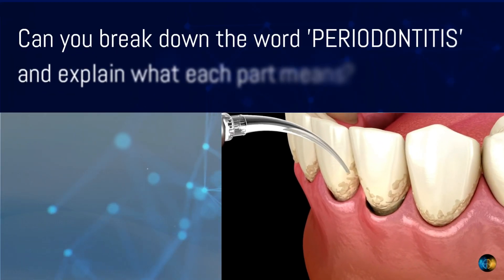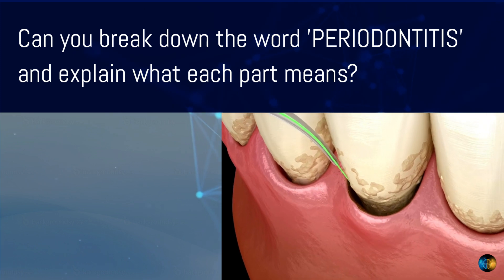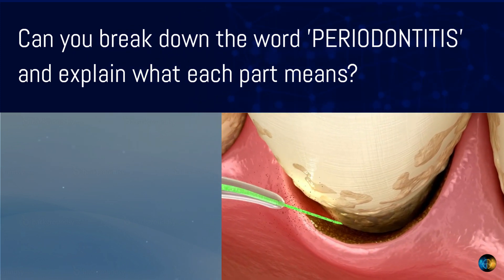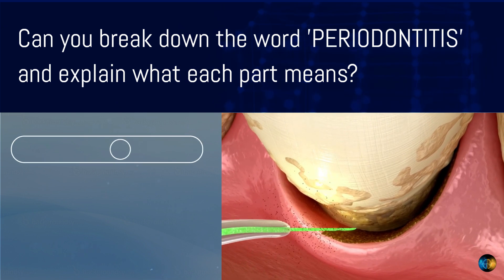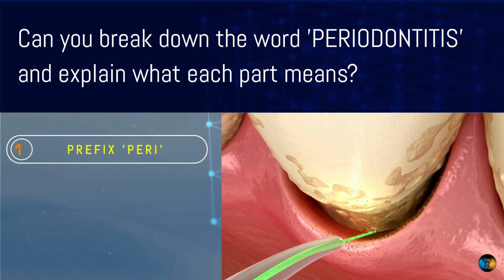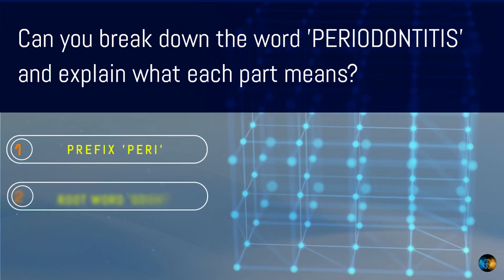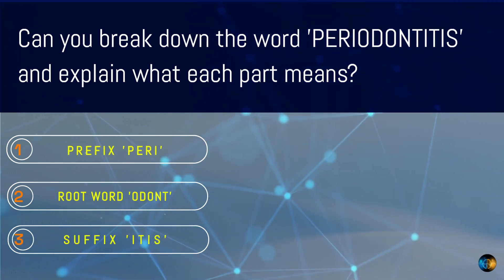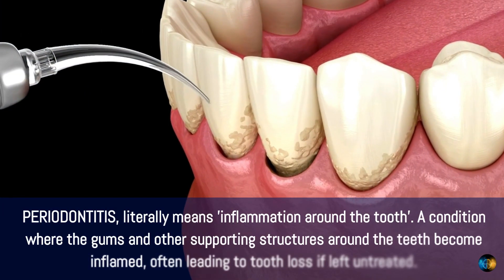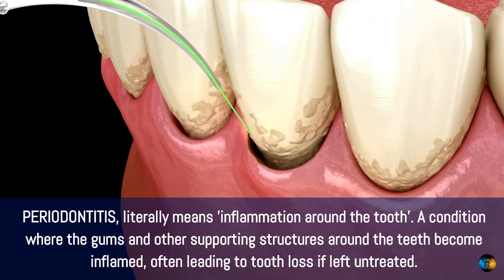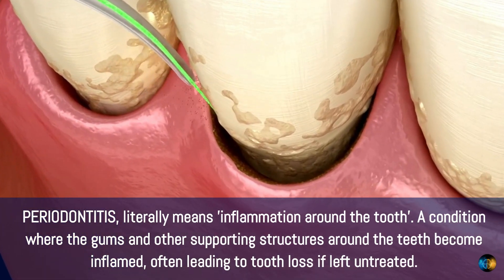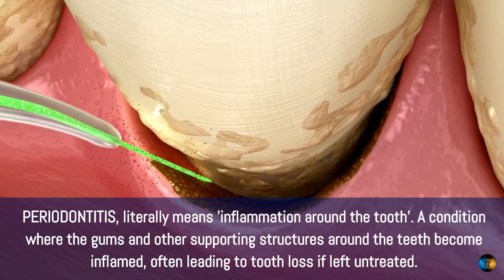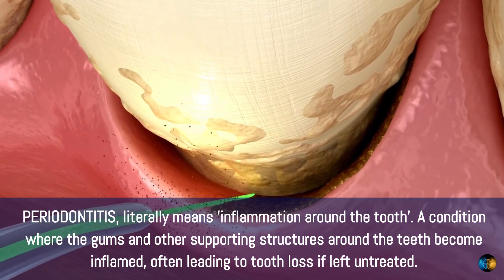Can you break down the word periodontitis and explain what each part means? The word periodontitis can be broken down into three parts: the prefix peri, meaning around; the root odont, meaning tooth; and the suffix itis, meaning inflammation. So, periodontitis literally means inflammation around the tooth — a condition where the gums and other supporting structures around the teeth become inflamed, often leading to tooth loss if left untreated.